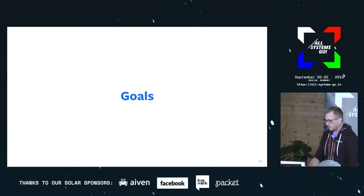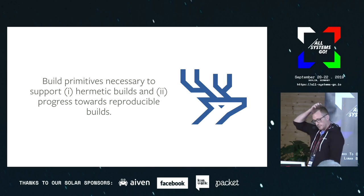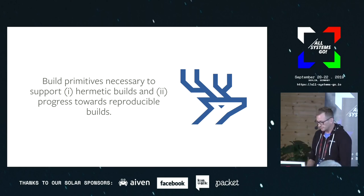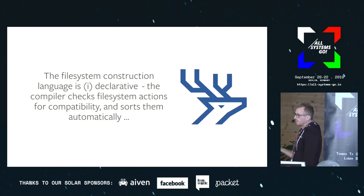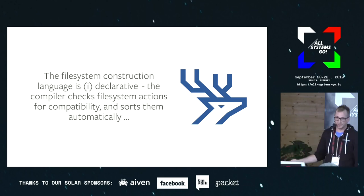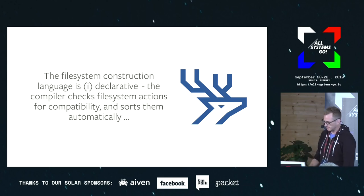So what are the goals of the Buck image build project? We want to be able to build primitives necessary to support hermetic builds and progress towards reproducible builds — not just in binaries or compilation artifacts, but also container artifacts and images themselves. Being able to reproduce them when you rebuild from a particular git hash or hg hash, and actually having full hermetic builds, which means your build environment doesn't affect the output of the build itself. The file system construction language is declarative, so the compiler will check for file system actions for compatibility, sort them automatically, and figure out what the dependencies are. You don't have to imperatively understand how the file system is going to get constructed.